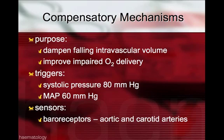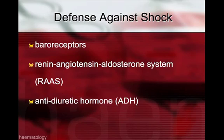The body has several compensatory mechanisms. The purpose of these compensatory mechanisms is to dampen the falling intravascular volume and improve impaired oxygen delivery to the cells. The compensatory mechanism is primarily triggered through the sensation of falling blood pressure — hypotension, defined as a systolic pressure of less than 80 or mean arterial pressure of less than 60. The three main defenses against shock are baroreceptors, the renin-angiotensin-aldosterone system, and antidiuretic hormone.